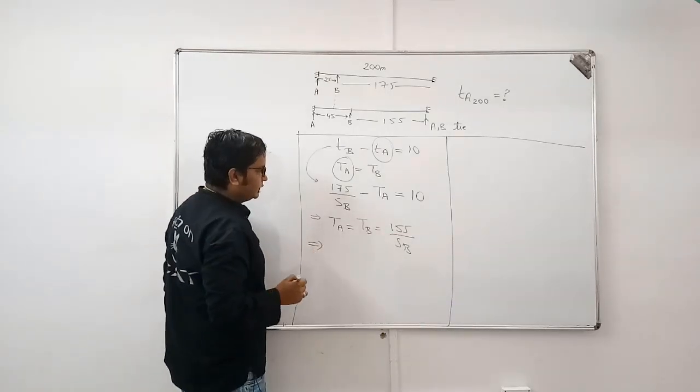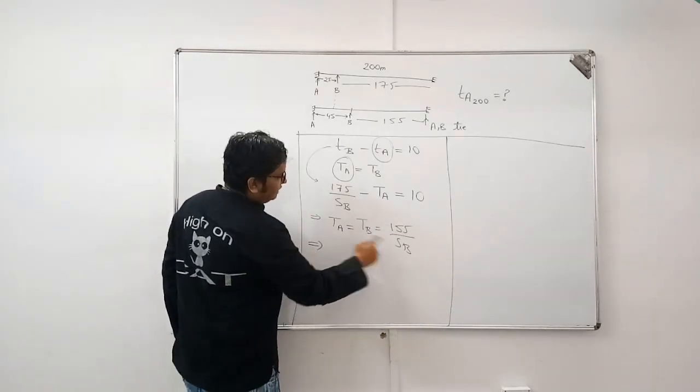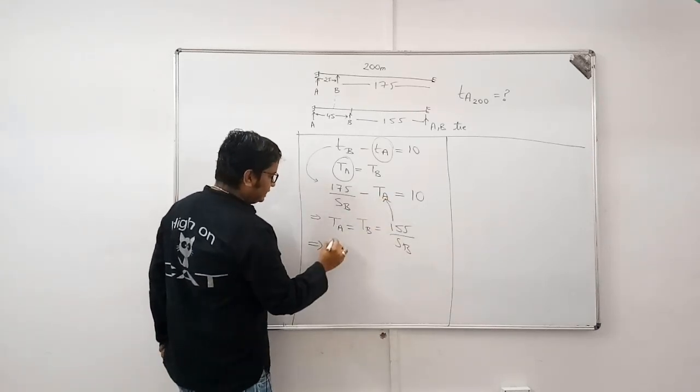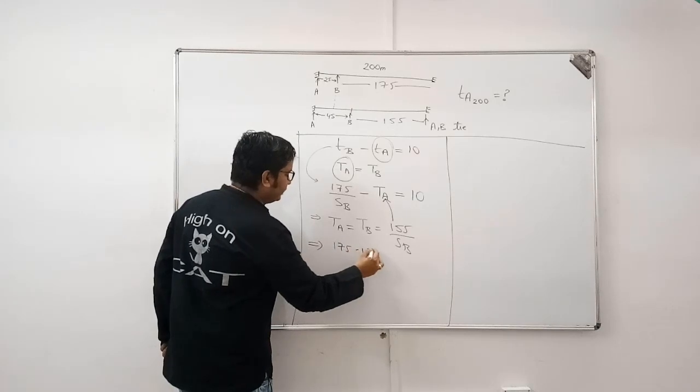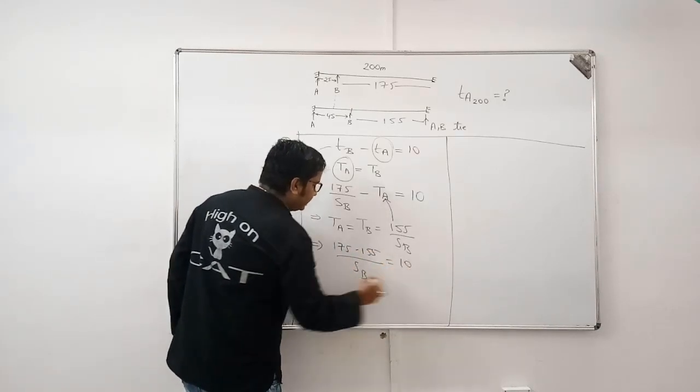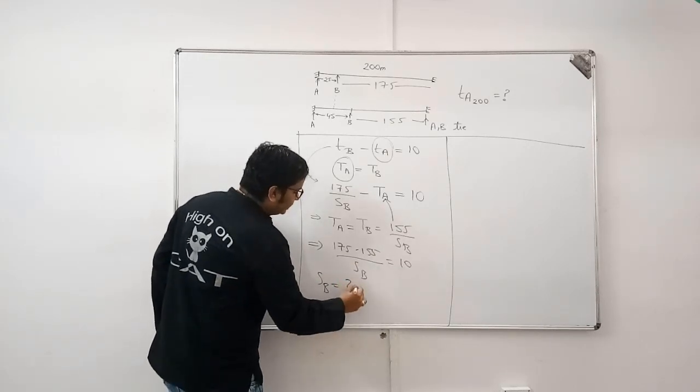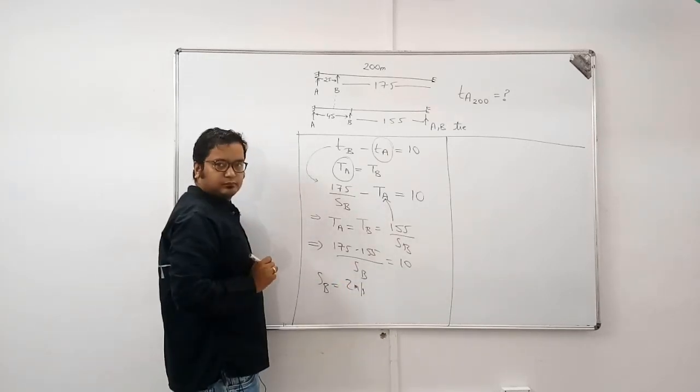Now, what we do is, we put the value of TA here. So, 175 minus 155 by SB is equal to 10. SB is equal to 20 by 10. That is 2 meter per second.